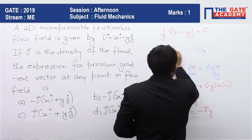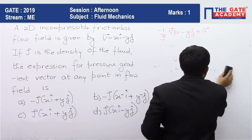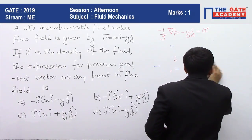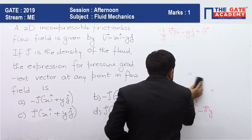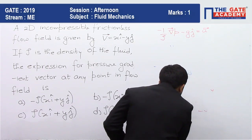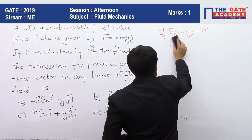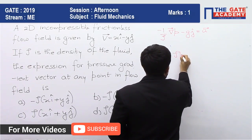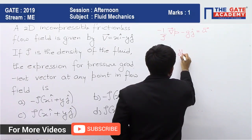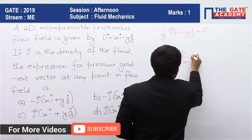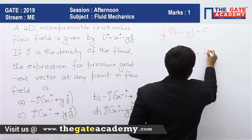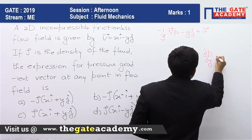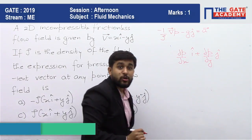So if you want to find out the gradient in the horizontal plane which will be written as del P by del x i cap plus del P by del y j cap. I think our answer is solved now. So let me rub the board first. So you will have del P by del x i cap plus del P by del y j cap. This will be the pressure gradient in the horizontal plane.